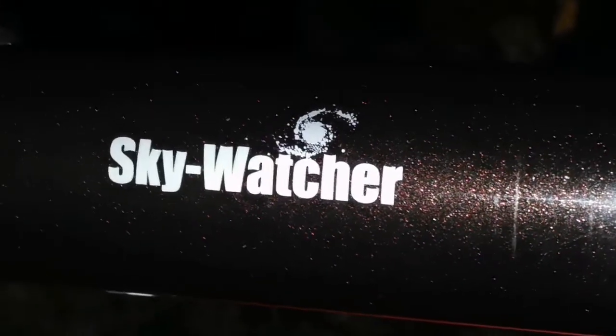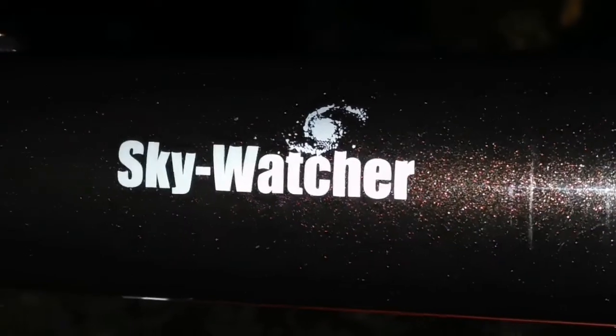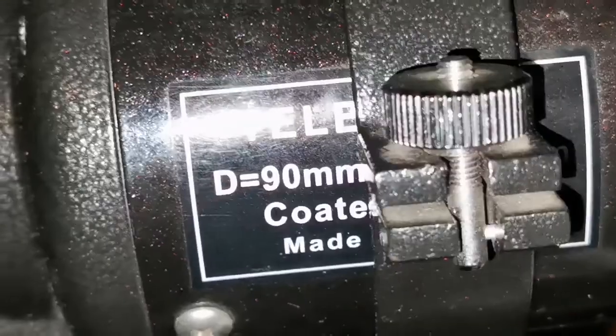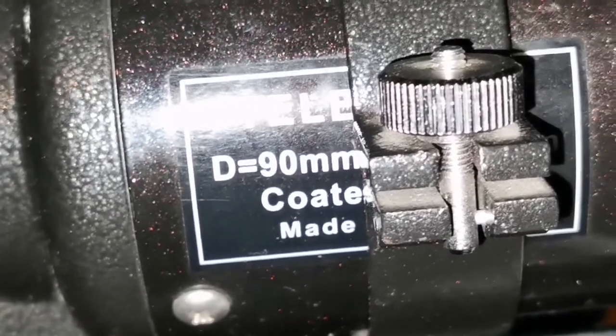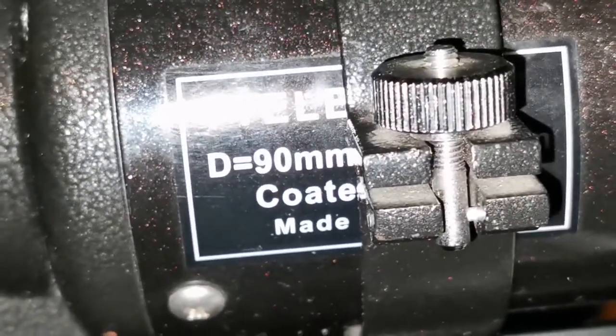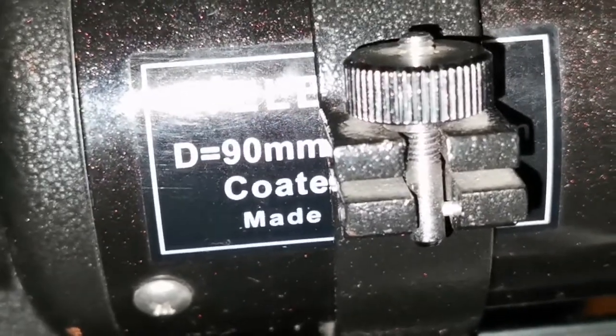What you can see is that the Skywatcher EVO Star 90mm objective lens refractor telescope, as you can see, is made in China. I think it is F10 because it's 900mm also. So it makes the F10 telescope refractor, of course.